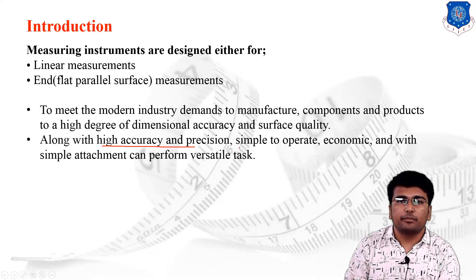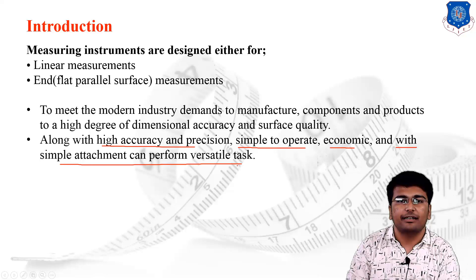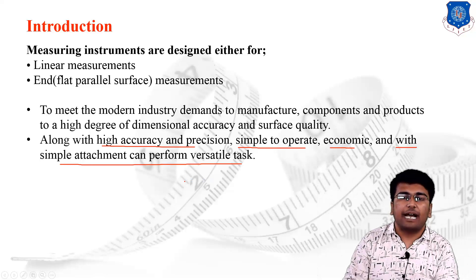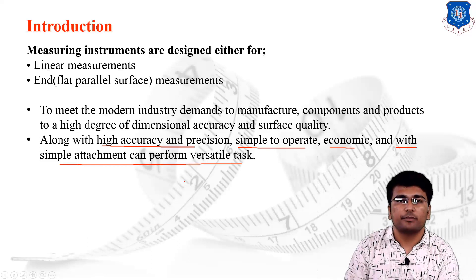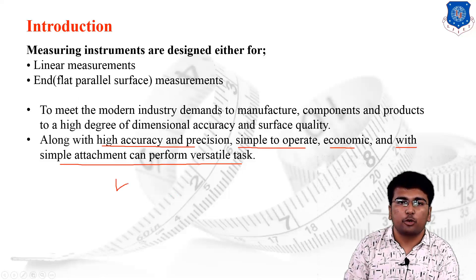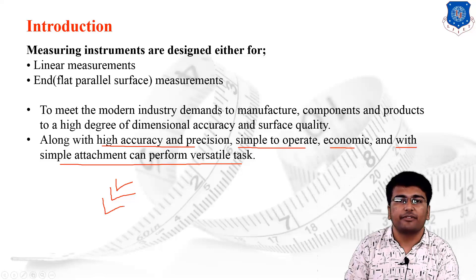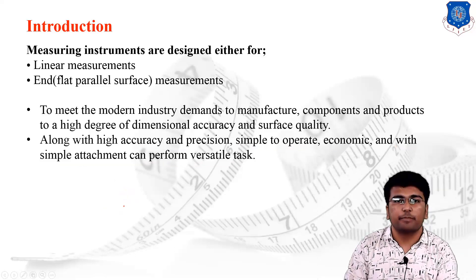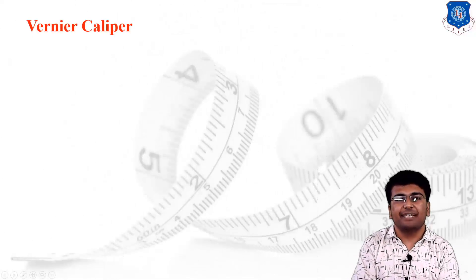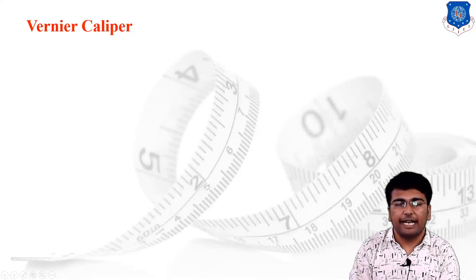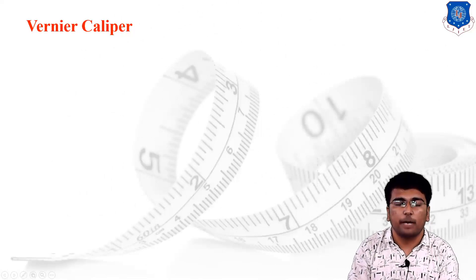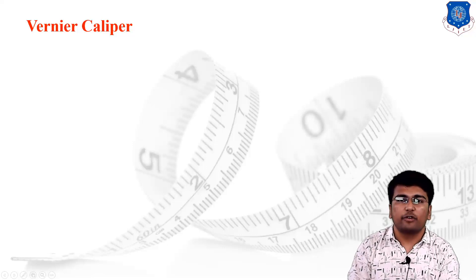The instrument must be simple to operate, economic, and with simple attachments it should be able to perform versatile tasks. So when buying a measuring instrument, you should check that it is simple to operate, within your budget, and useful for performing versatile tasks with simple attachments. This is the basic concept of measurement and the requirement of the upcoming modern industrial era.